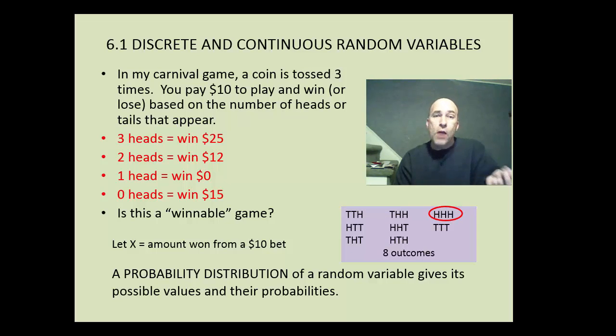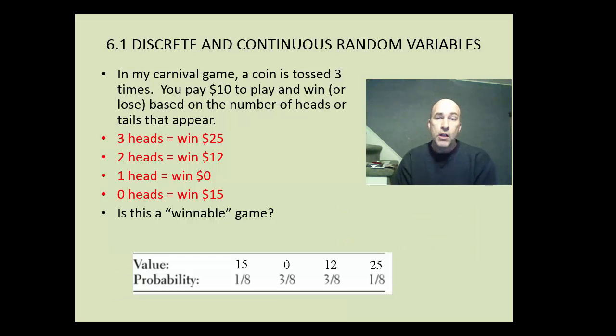And we can find all the probabilities. I see here there's one way for me to win $25, getting heads, heads, heads. So that's a one-eighth probability. There's one way to get three tails, meaning zero heads, and win $15. So that has a one-eighth probability. There are three ways to have one head and two tails. These are the outcomes that would win zero dollars. And there are three outcomes that have two heads and one tail. In those instances, I would win $12. So those have a three-eighths probability. And a probability distribution is just a listing of all these probabilities associated with their outcomes. So we have all the values in this game along with the probabilities we see here. You can take a minute and copy those down.